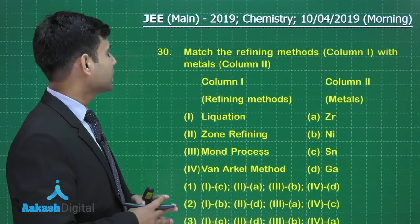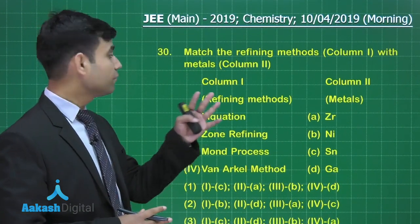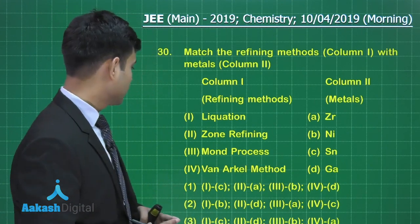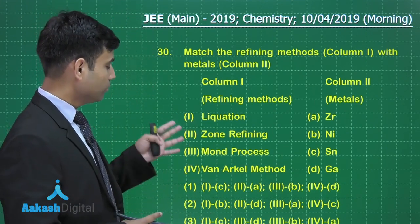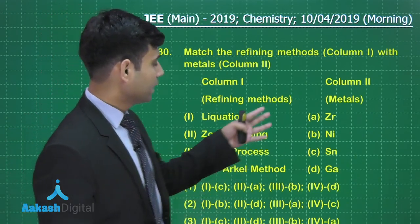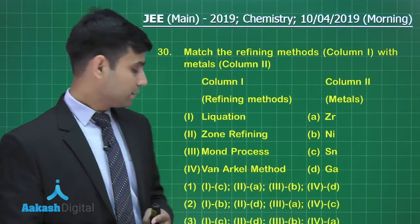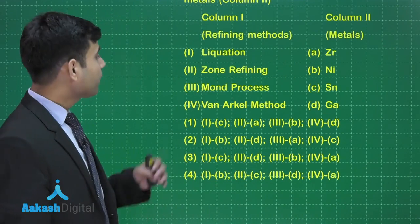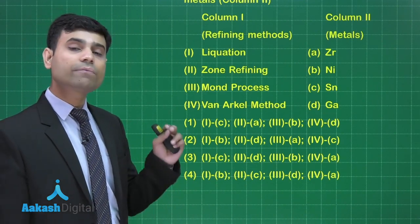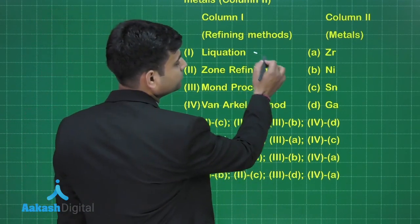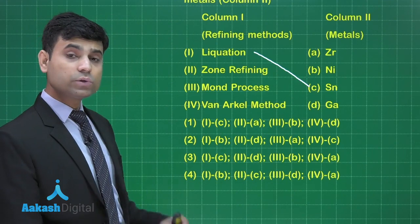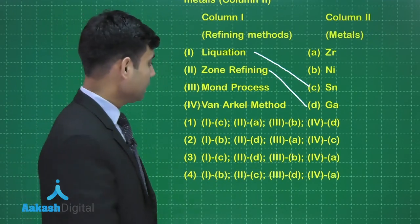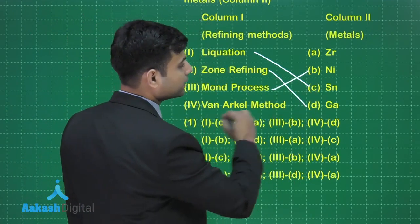The next question says: match the refining methods in column 1 with metals in column 2. Column 1 has liquation, zone refining, Mond process, and van Arkel method. Column 2 has zirconium, nickel, tin, and gallium. Liquation is used for refining tin, so 1 matches with C. Zone refining is used for semiconductors like gallium. Mond process is used for nickel, and van Arkel method is used for zirconium.